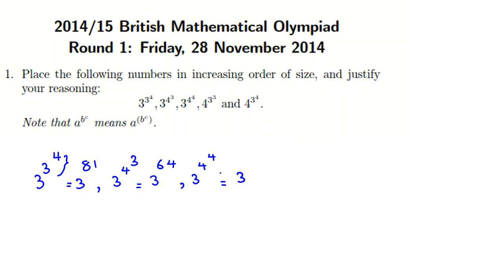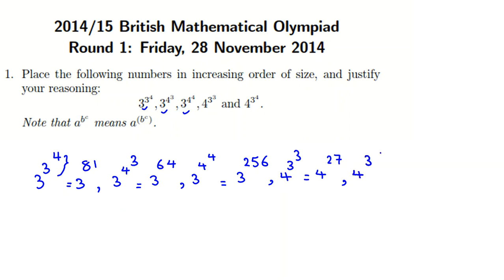4 to the 4 is 4 times 4 equals 16, times 4 equals 64, times 4 equals 256. So 3 to the 4 to the 4 becomes 3 to the 256. Then 4 to the 3 to the 3: 3 to the 3 is 27, so that is 4 to the 27. And the last one, 4 to the 3 to the 4: 3 to the 4 is 81, so that is 4 to the 81.